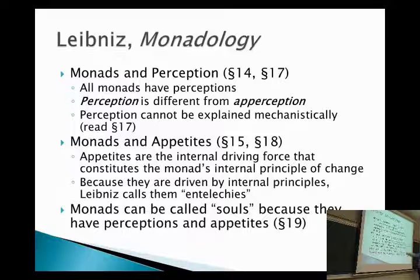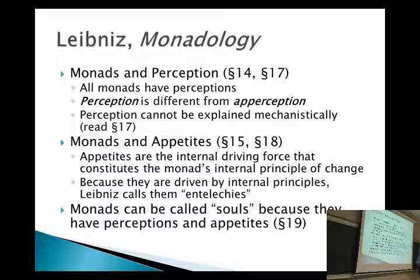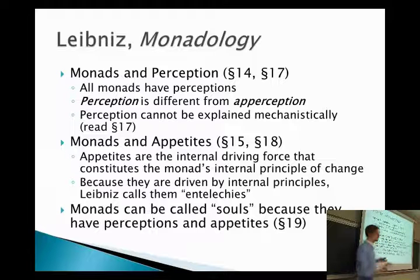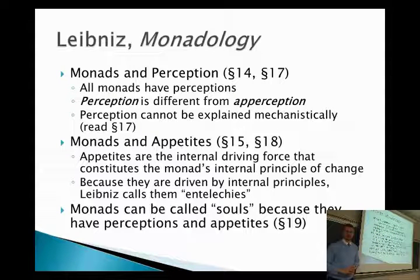He says we can call these monads 'souls,' because they have perceptions and appetites, which he thinks is sufficient for something being a soul. But they're not souls entirely like you and I — they don't have self-awareness, they aren't rational creatures like you and I are.